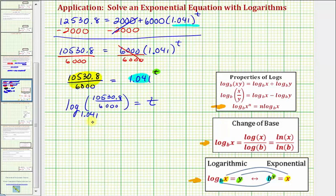And now to evaluate this logarithm, we'll use the change of base formula given here and we'll use the common log. And therefore, T is equal to the common log of the quotient, 10,530.8 divided by 6,000 divided by the common log of the base, 1.041.